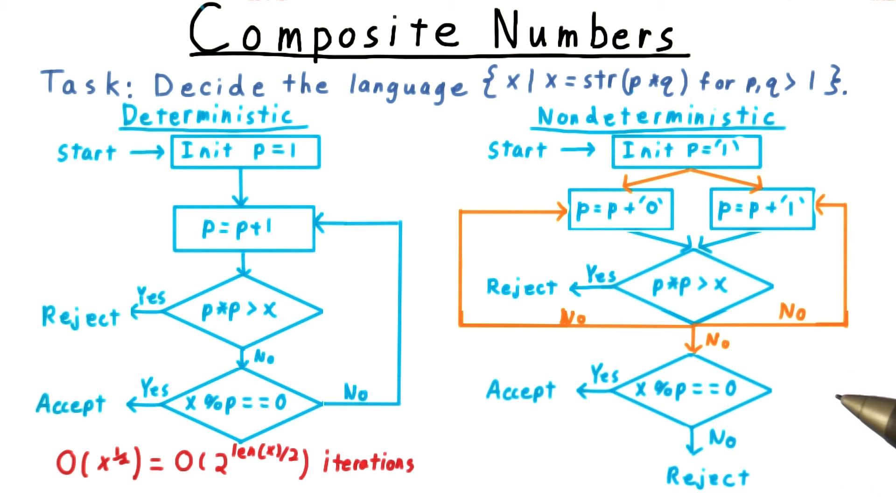In fact, the machine will always reject because every branch of computation will be rejected in one of these two places.